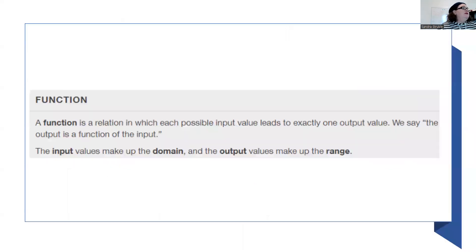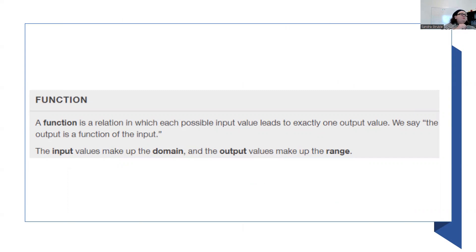A function is a relation in which each possible input value leads to exactly one output value. We say the output is a function of the input. The input values make up the domain — that's your x values — and the output or y values make up your range.